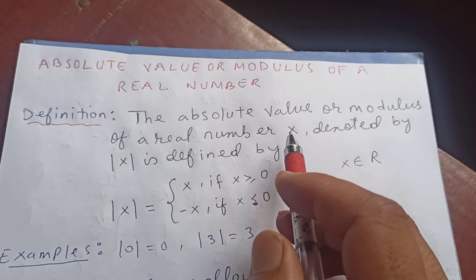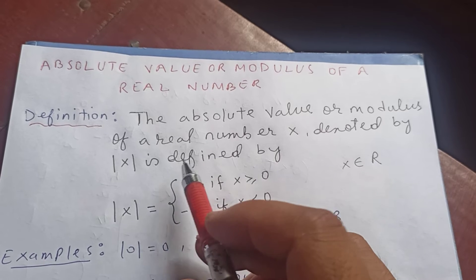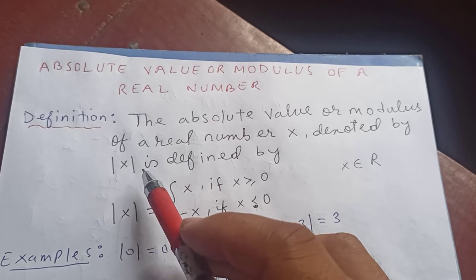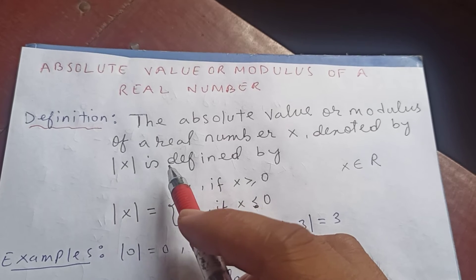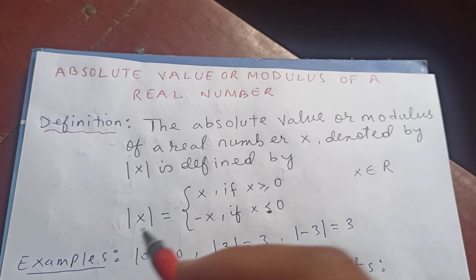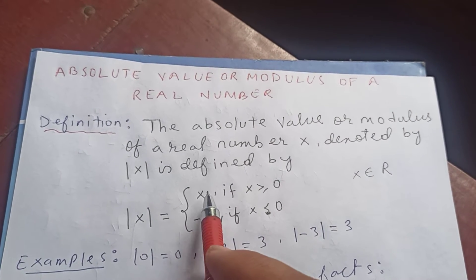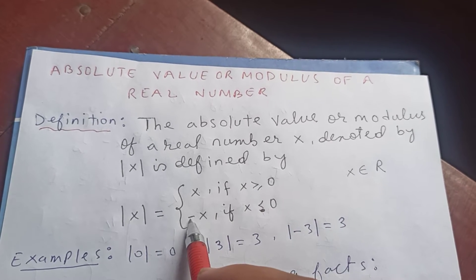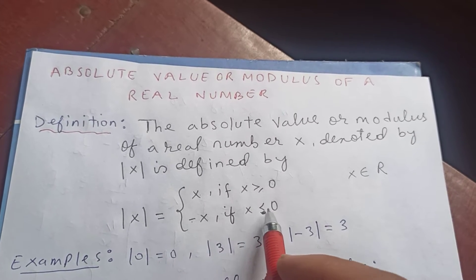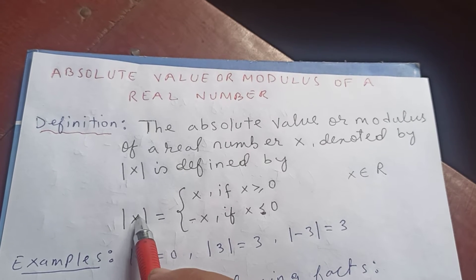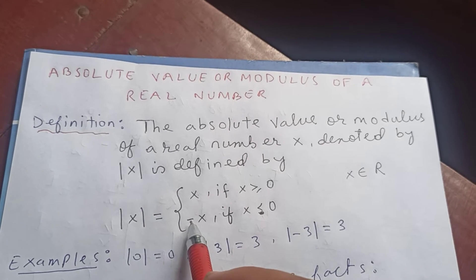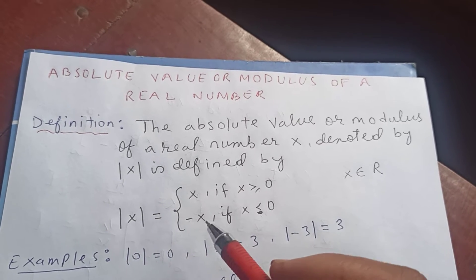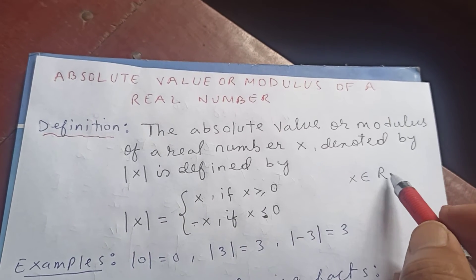The absolute value or modulus of a real number X, denoted by mode of X, is defined as: mode of X equals X if X is greater than or equal to 0, and negative X if X is less than 0. Meaning if X is less than 0 then you get negative X, and if it is positive you get X only.